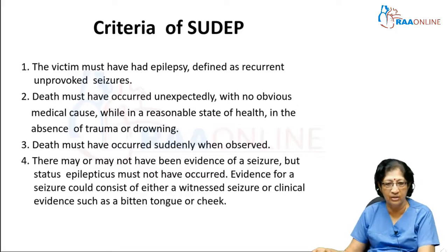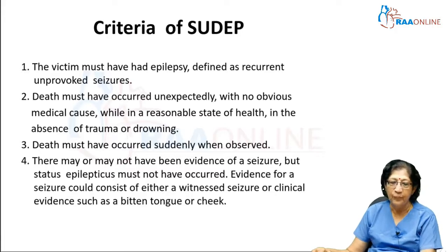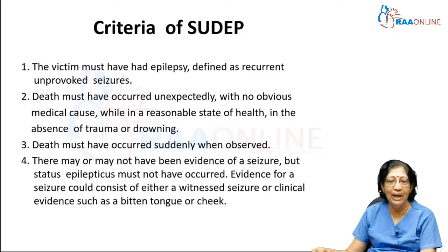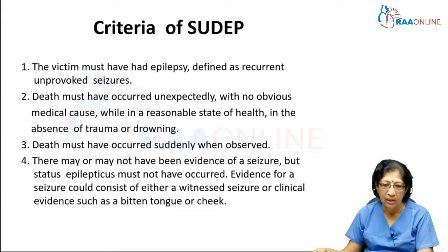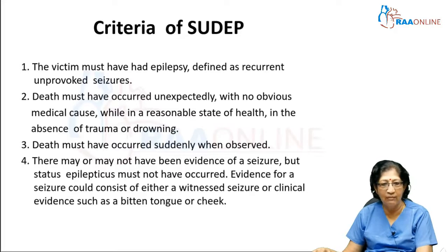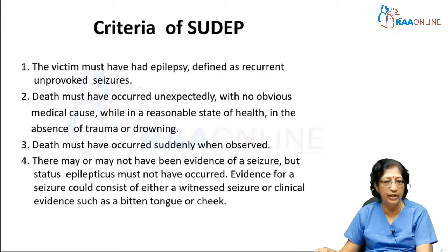Every word in this is important. Death should have occurred unexpectedly with no medical cause; the patient should have been in good health with absence of trauma or drowning, and this must have occurred suddenly when observed. There may or may not be any evidence of a seizure, but status epilepticus should not have occurred at that time. Evidence for the seizure can be a witnessed one or some other clinical evidence like a bitten tongue or cheek. All these contribute to a probably seizure-related death.